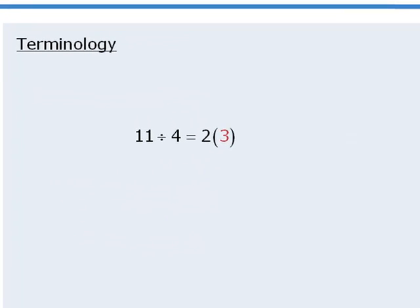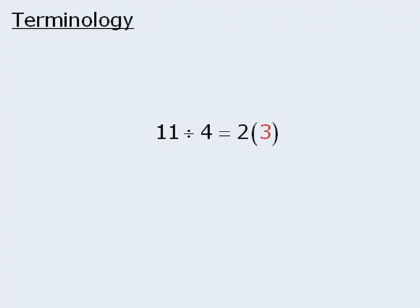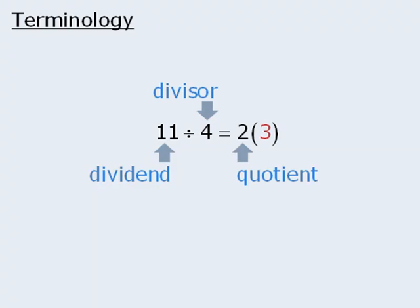Here we have 11 divided by 4 equals 2 with remainder 3. The 11 here is called the dividend. 4 is called the divisor. 2 is the quotient, and 3 is the remainder.